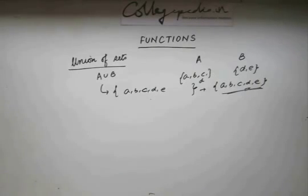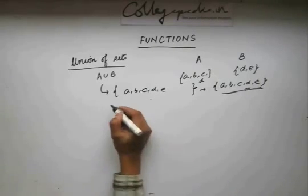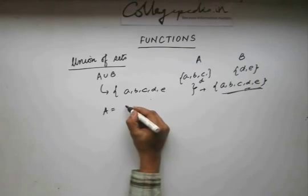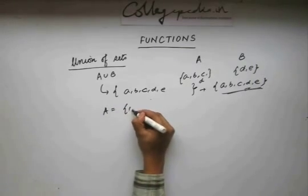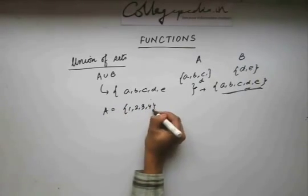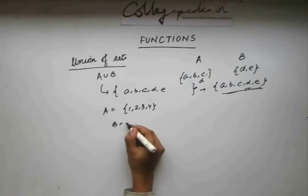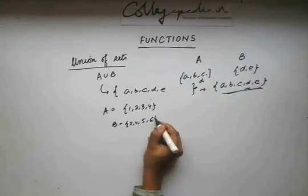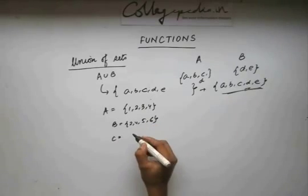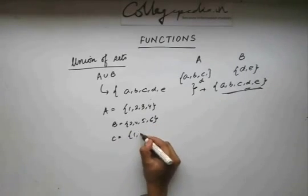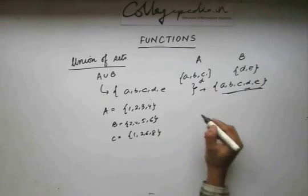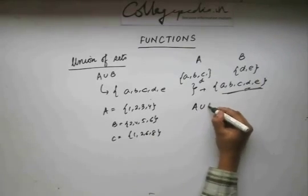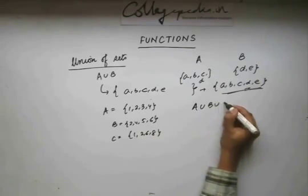This is what union of sets is. Let's take another example. Suppose I have a set A with four integers, a set B with four integers, and a set C with four integers. The question is: what is A union B union C?